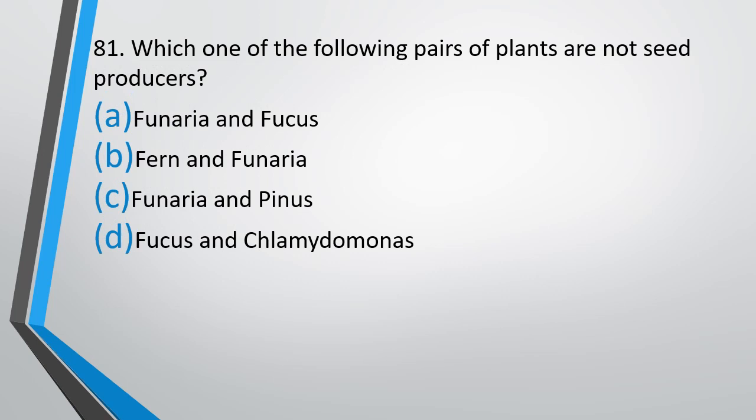Question No. 81. Which one of the following pairs of plants are not seed producers? Option A: Funaria and Fucus. Option B: Fern and Funaria. Option C: Funaria and Pinus. Option D: Fucus and Chlamydomonas. The correct answer is Option B: Fern and Funaria.